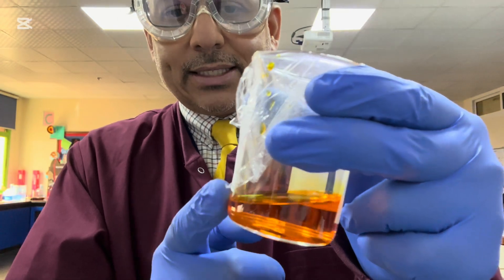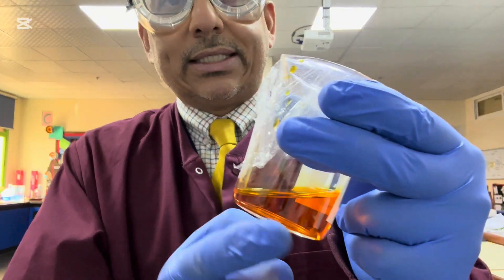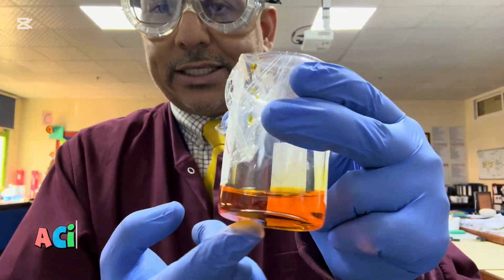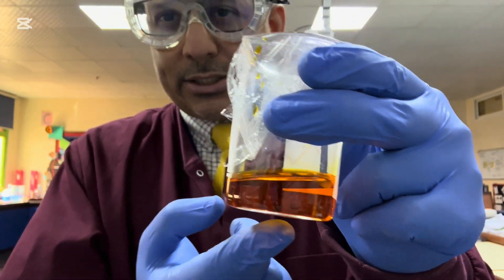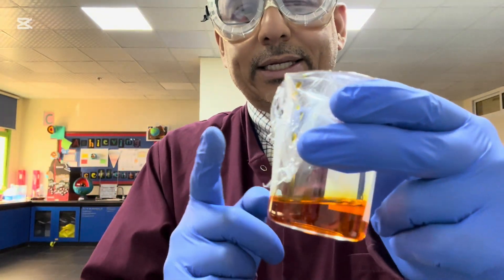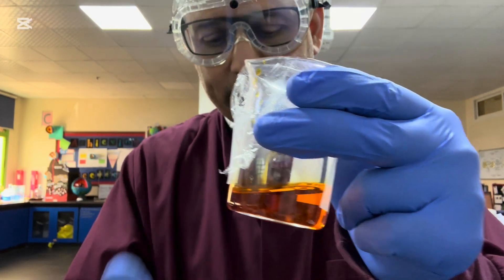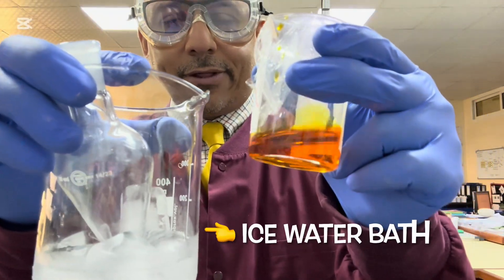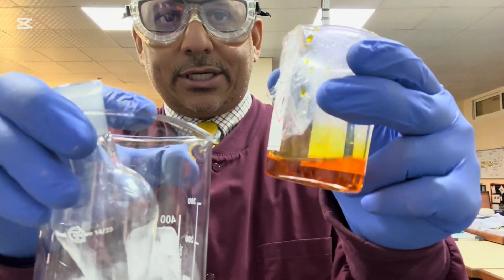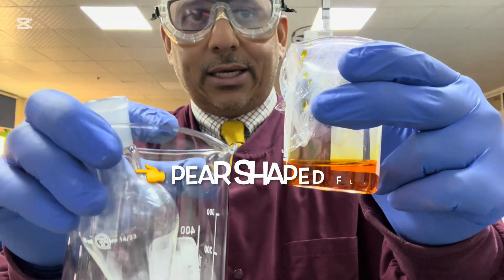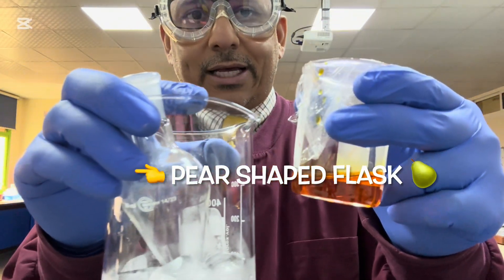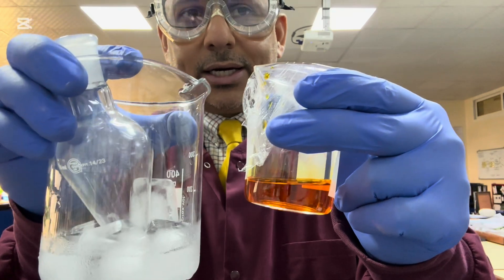This is the oxidizing agent. I've prepared some already. This is 20 centimeters cubed of acidified potassium dichromate solution, and what I need to do for the first step is I need to cool this down in an ice water bath. I'm going to very carefully add this 20 centimeters cubed of acidified potassium dichromate solution to this 50 centimeters cubed pear-shaped flask, and I'm going to cool it down in an ice bath.